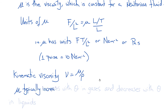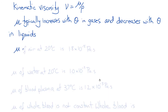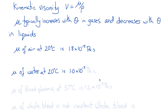Viscosity typically increases with temperature in gases and decreases with temperature in liquids. For example, the viscosity of air at 20°C is 1.8 × 10⁻⁵ pascal-seconds. The viscosity of water at 20°C is 1.0 × 10⁻³ pascal-seconds — about 50 times greater. The viscosity of blood plasma at 37°C is only slightly greater than that of water at room temperature: 1.2 × 10⁻³ pascal-seconds.